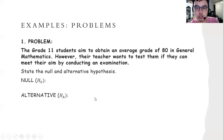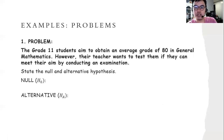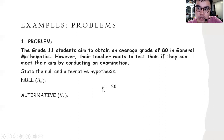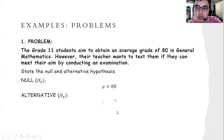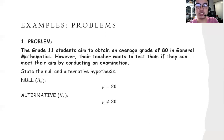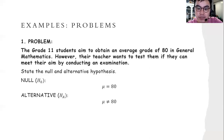We're now going to apply it in word problems. The grade 11 students aim to obtain an average grade of 80 in general mathematics. However, their teacher wants to test them if they can meet their aim by conducting an examination. The null hypothesis states that the mean is equal to 80. The alternative hypothesis states that the mean is not equal to 80. This type of alternative hypothesis is non-directional; we use the term 'not equal to,' and the test we use is a two-tailed test, because there is no specific comparison.